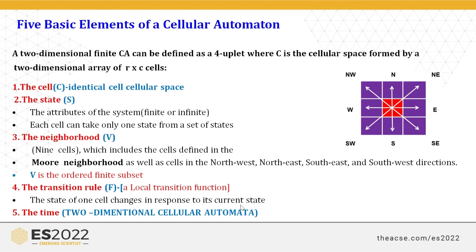The five elements involved in cellular automata: the two-dimensional finite cellular automata can be defined as a four-tuple where C is the cellular space formed with a two-dimensional array. First is the cell — identical cells forming equal-space cellular space with a 2D square cell. Second is the state — the attribute of the system, either finite or infinite. The neighbourhood consists of nine cells including Moore's neighbourhood: northwest, northeast, southeast, southwest, and other directions. V is the ordered finite subset. Next is the transition rule F, the local transition function. Finally, the fifth element is time, based on the two-dimensional model being used.